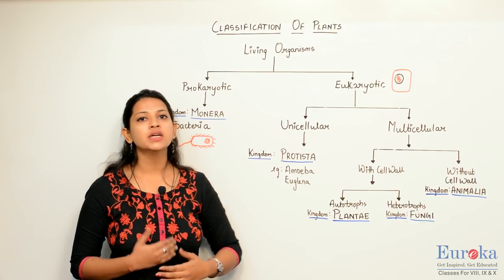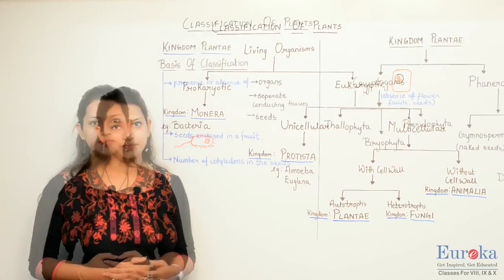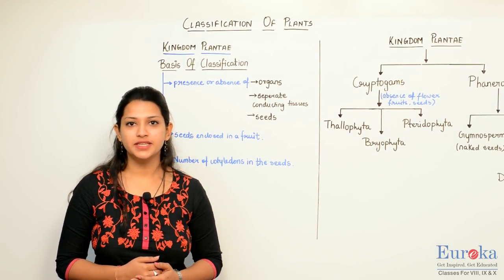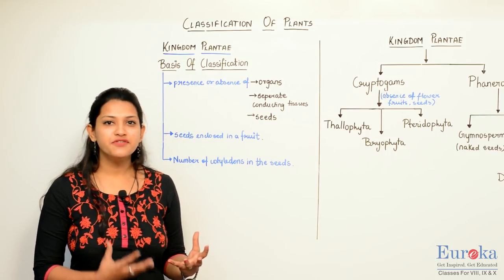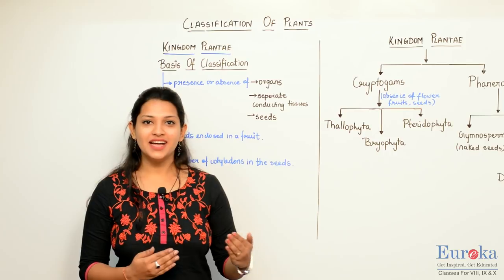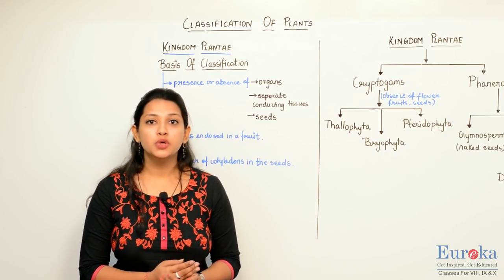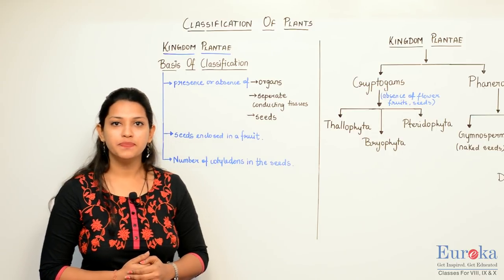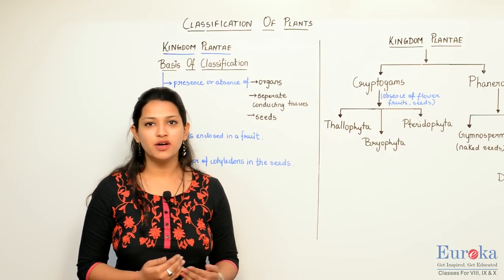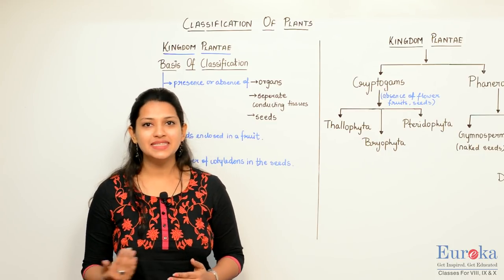Today we are going to learn more in detail about only kingdom Plantae. How is a plant cell different from an animal cell? The plant cell has an additional cell wall apart from the cell membrane, which is absent in the animal cell. Also, the plant cell has chloroplasts because of which it is able to synthesize its own food, whereas the animal cell cannot.